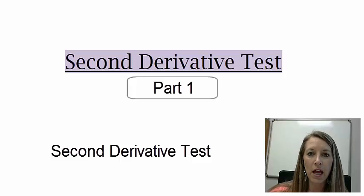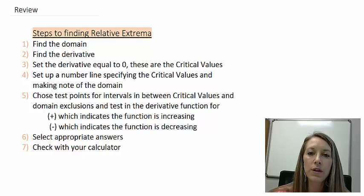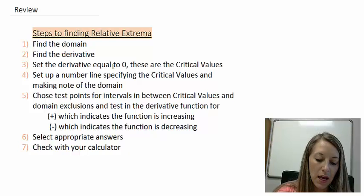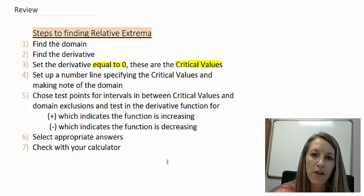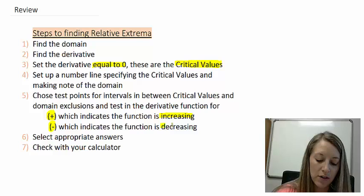Before moving to the new way, let's review what we had to do in the old way. The way that we know to find relative extrema is basically the same way that we found increasing and decreasing, and then we saw how our graph changed. Our first step was to find the domain. Our second step was to take the derivative, set it equal to zero, and that gave you the critical value. You put those critical values on a number line and tested the intervals in between. If your interval came up positive, that means your graph was increasing. If your interval was negative, that means your graph was decreasing.